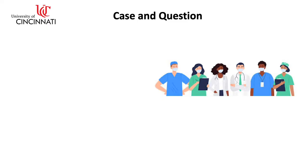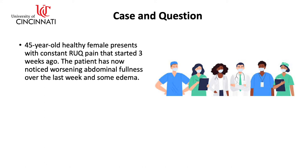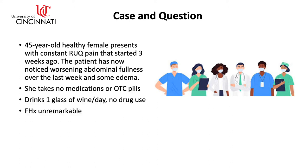Starting with your case: you have a 45-year-old healthy female who presents with constant right upper quadrant pain that started three weeks ago. The patient has now noticed worsening abdominal fullness over the last week and some edema. She takes no medications, over-the-counter pills, herbs, or supplements. She drinks one glass of wine a day, has no history of drug use, and her family history is otherwise unremarkable.